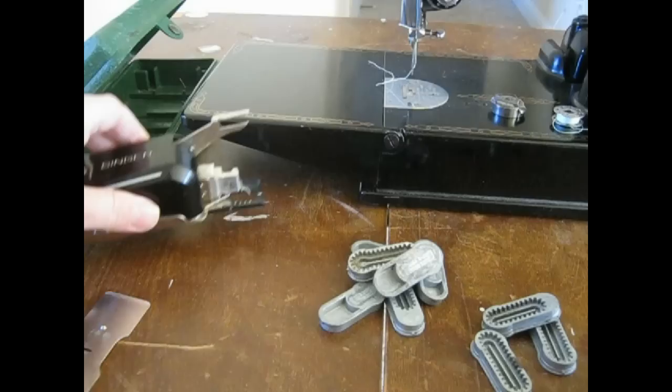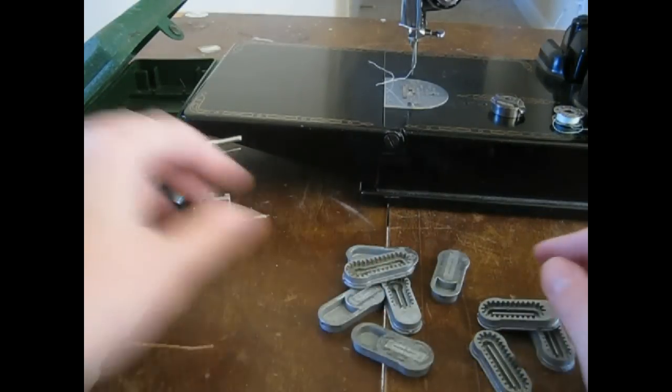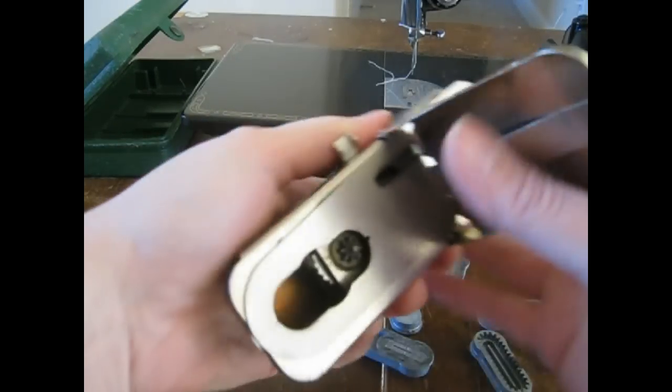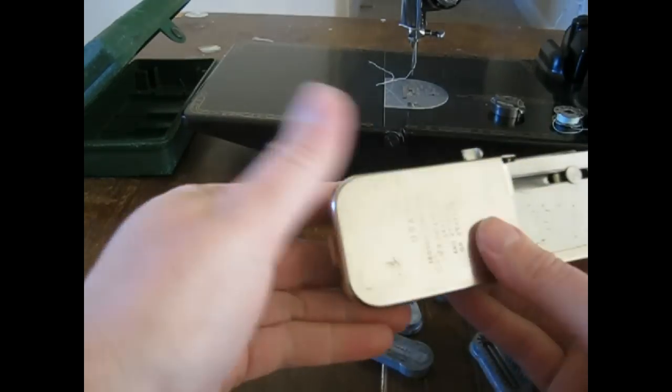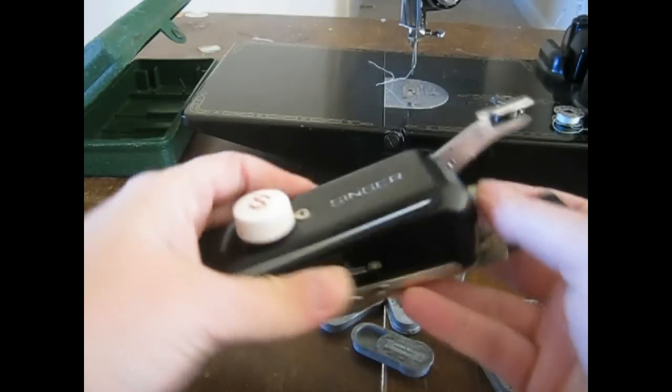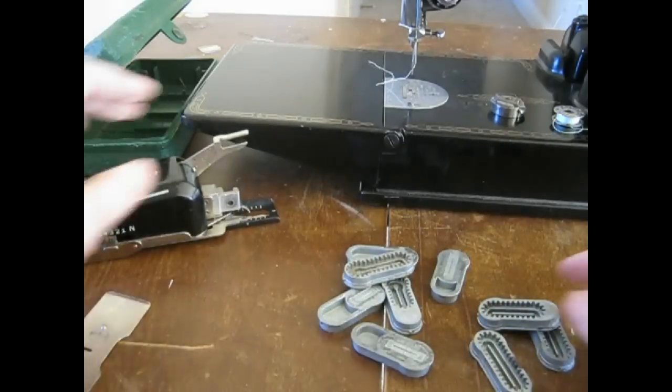You'll have a bunch of these things. These are the cams. The way this thing works, you put the cam on this little plate back here, and it traces its way around the cam and makes a zigzag. The whole thing wiggles back and forth. It's pretty cute.